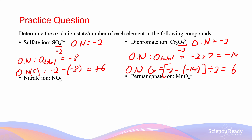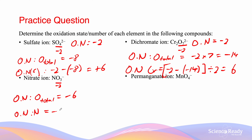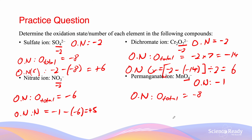For the nitrate ion NO₃⁻, because oxygen is not paired with fluorine, it has an oxidation state of −2. So the total oxidation state of oxygen equals −6. The oxidation number of nitrogen equals −1 minus −6, which equals +5. For the permanganate ion MnO₄⁻, it has an oxidation number of −1. Each oxygen is −2, so the total equals −8. The oxidation state of manganese equals −1 minus −8, which equals +7.